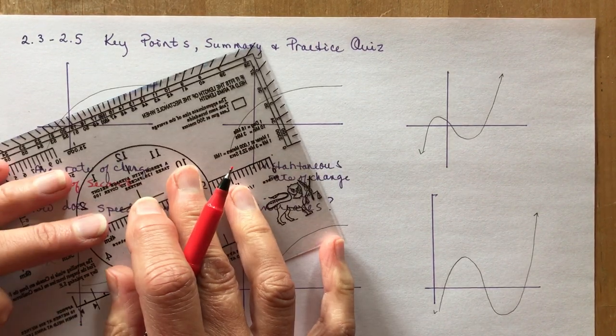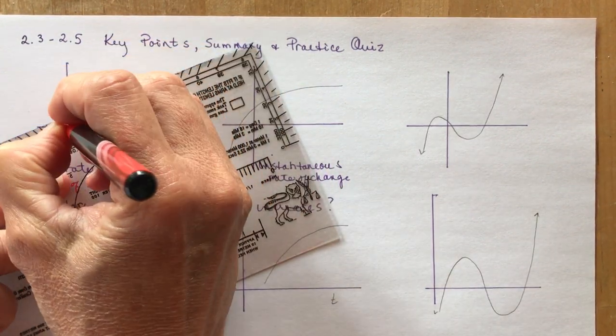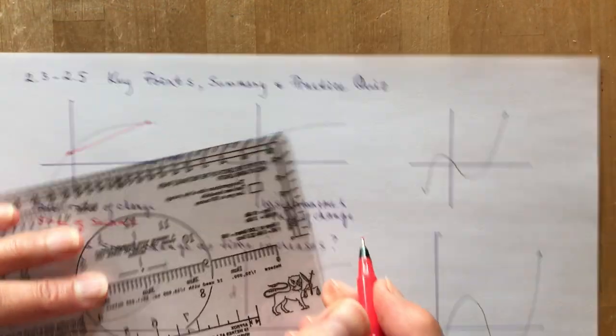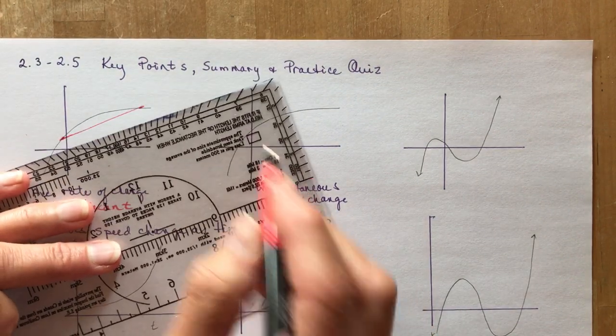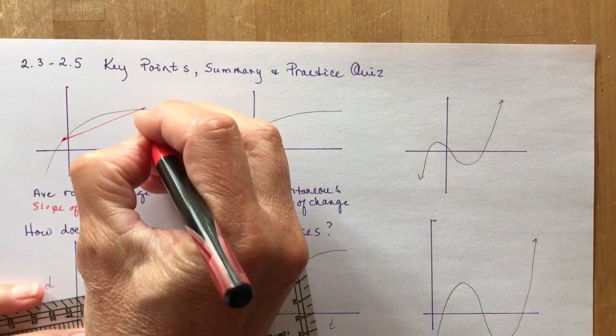Remember that a secant would be something between two points. If I draw it right through and continue it, it becomes a secant line.